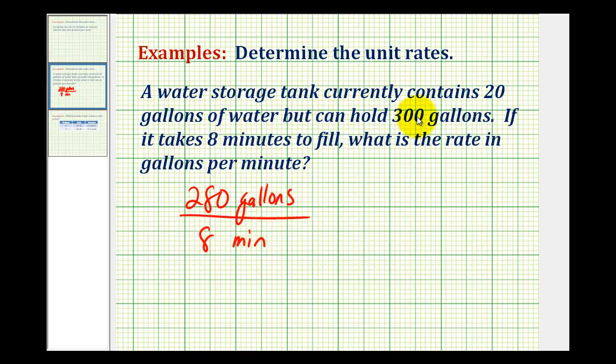So we don't want to use the 300 gallons as part of the rate, it's 300 minus the 20 gallons. And now for this to be a unit rate, we need to have the denominator be one minute, not eight minutes. So if we divide the denominator by eight, we would have one minute in the denominator, but then we also have to divide the numerator by eight.